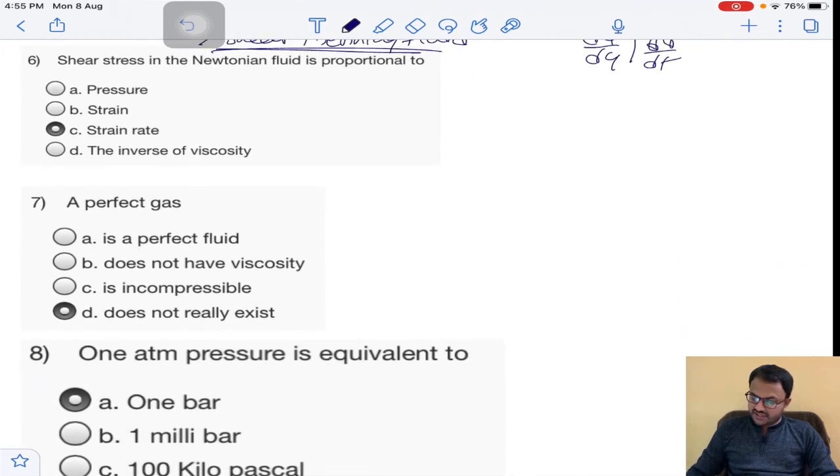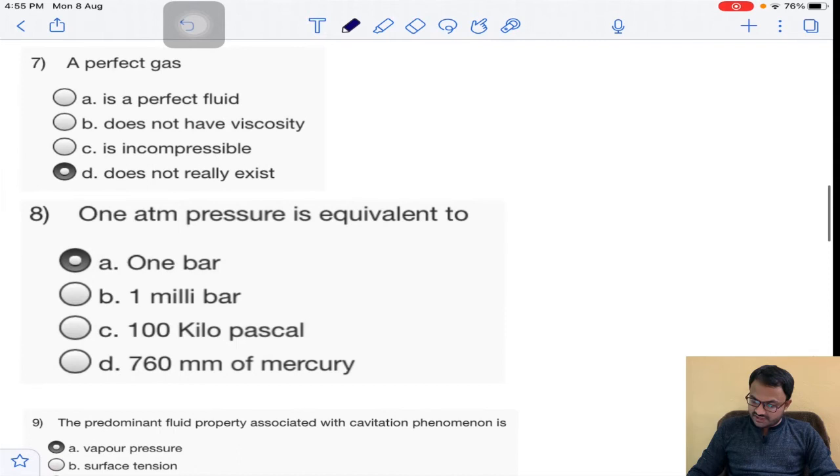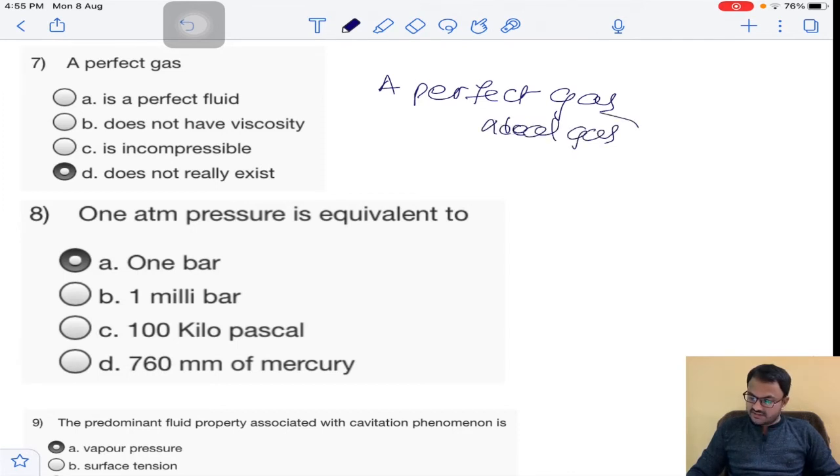Next question: shear stress in Newtonian fluid τ is directly proportional to dθ/dt. This is nothing but strain rate, not strain - it is strain rate, that is per unit time. So sixth question answer is C. Next question: a perfect gas means generally ideal gas. Ideal gas will never exist practically. Answer is D.